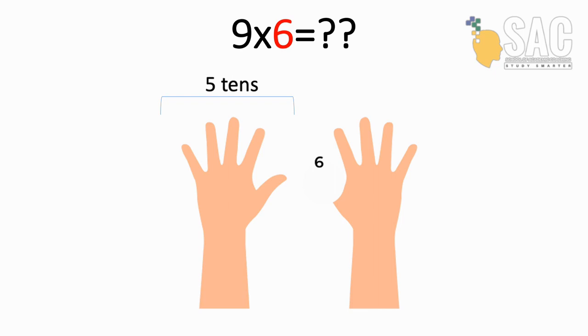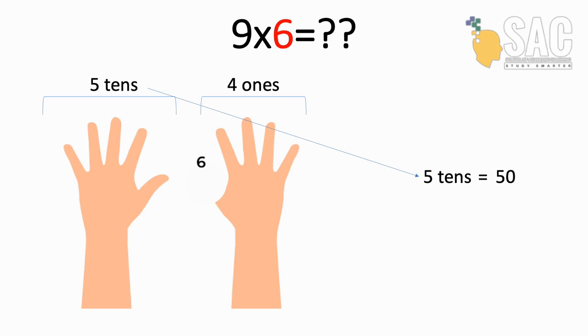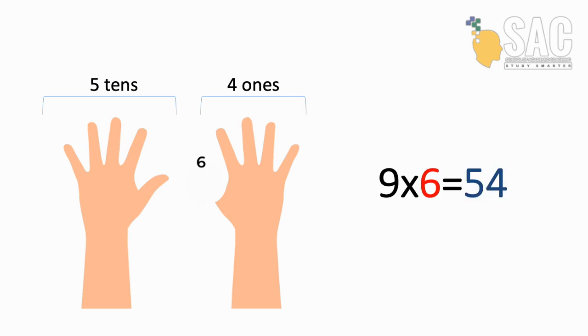Then the number of fingers on the left represent the number of tens. So if you count, you should have 5 tens. Then the number of fingers on the right represent the number of ones. So it will be 4 ones. 5 tens is 50, 4 ones is 4. Then we add them, so 9 times by 6 is 54.